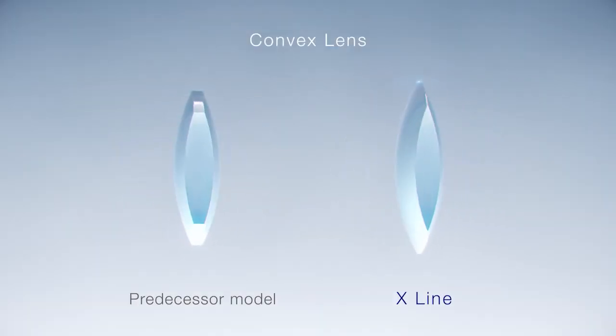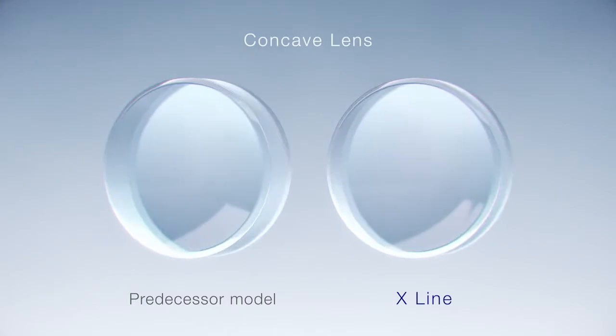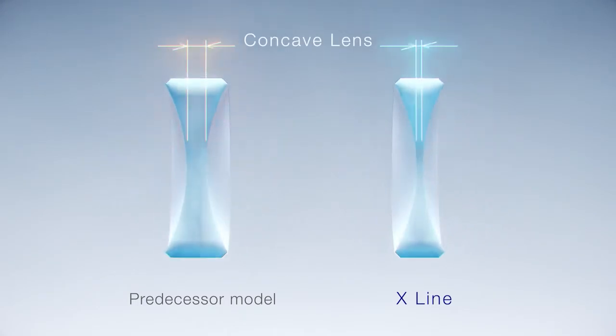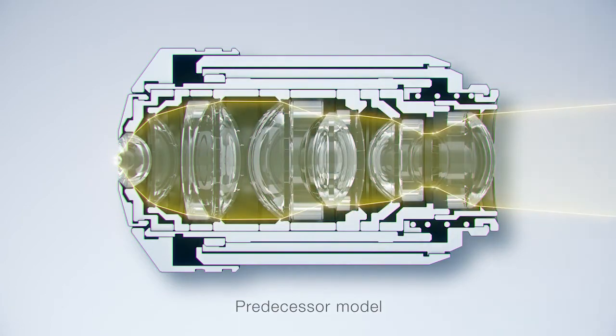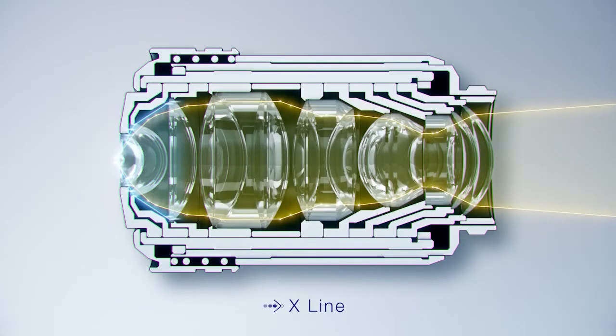X-Line objectives' ultra-thin edge convex lenses and ultra-thin concave lenses provide superior optical performance. Because they're so thin, we can fit more lenses into a standard objective housing.